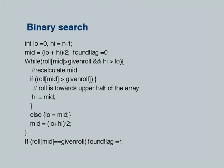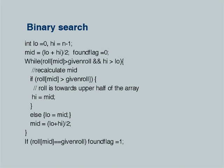If you locate an element such that roll[mid] equals given roll, you set a flag called found_flag equal to 1 and break — meaning you do not have to carry on further. Only if you do not find the element — in the else branch — if roll[mid] is greater than given roll, you set high to mid minus 1. Otherwise you set low to mid plus 1. This is the logic. We are going to execute this for the given data we saw in the previous slide.